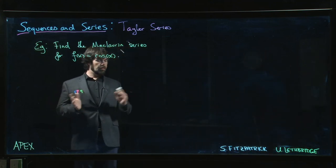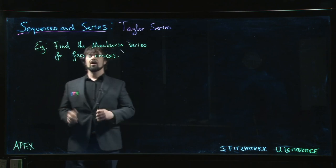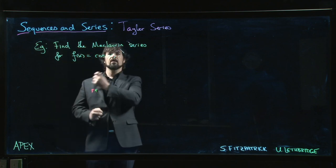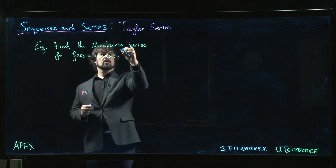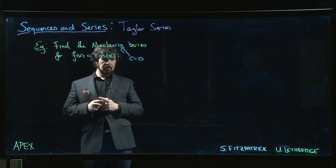All right, so here's our first example computing Taylor series. We're going to look for the Maclaurin series for f of x equal to cos x. So remember, Maclaurin just means that we're centering this thing at 0. So c is 0.